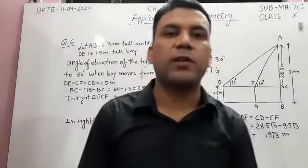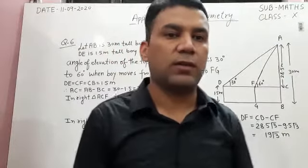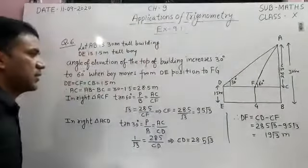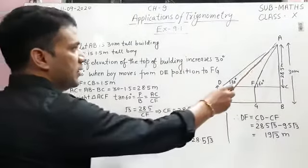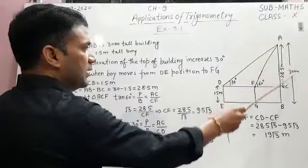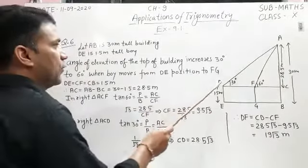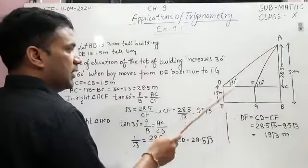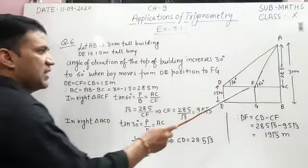Good morning everyone. In this video we will discuss question number 6 of exercise 9.1. In question number 6, it is given that a 1.5 meter tall boy is standing in front of a 30 meter tall building, and the angle of elevation of the top of the building is 30 degrees. When he moves towards the building and reaches the position FG,